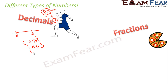Fractions are best understood with a pizza example. If a pizza is divided into five equal slices and you eat only one slice, you have eaten one-fifth of the pizza. This 1/5 is a fraction because it is not a complete whole — it is one part out of five equal parts. A fraction is never a whole number; it is something which is not whole. So a fraction represents part of a complete thing.